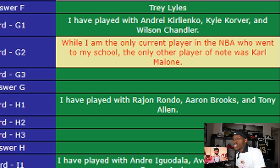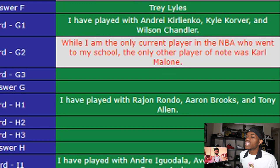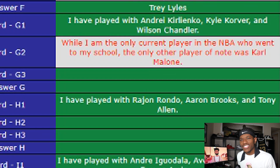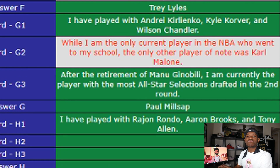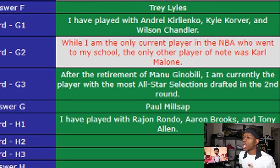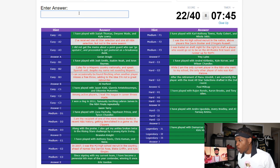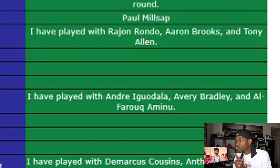Player G — first hint: 'I have played with AK-47, Kyle Korver, and Wilson Chandler.' Not enough. Second hint: 'I am the only current NBA player who went to my school — the only other notable player was Karl Malone.' Karl Malone went to Louisiana Tech. The only other player I know who went to Louisiana Tech is Paul Millsap — boom! Third hint confirmed: 'After the retirement of Manu Ginobili, I am currently the player with the most All-Star selections drafted in the second round.' Yes — Paul Millsap.